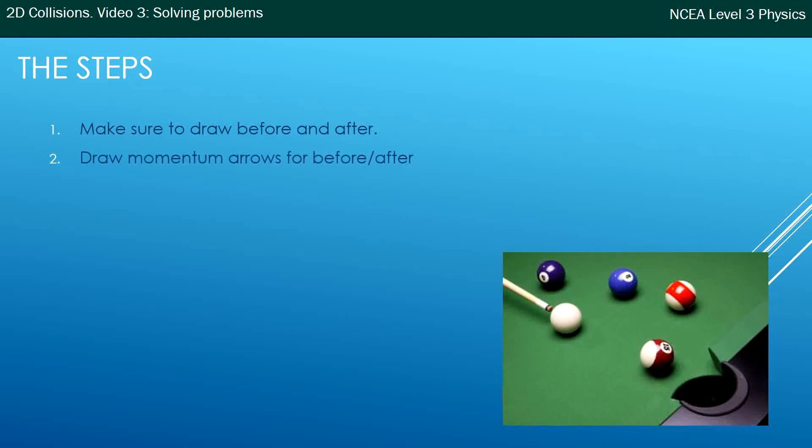Then make sure you add to your diagrams the momentum arrows, because people sometimes just leave the velocity arrows there and don't actually update them to think that we're dealing with momentum arrows. So draw your momentum arrows in, put the vectors together in a vector addition diagram if needed.